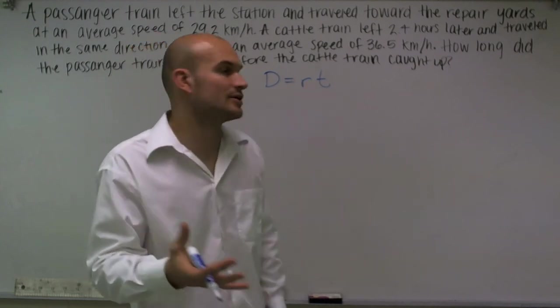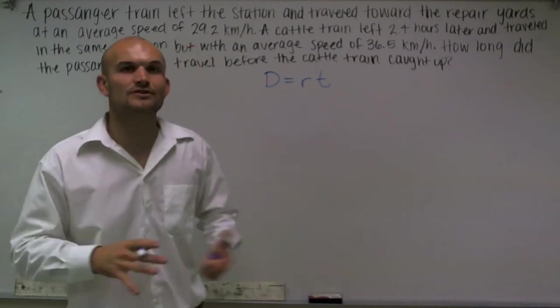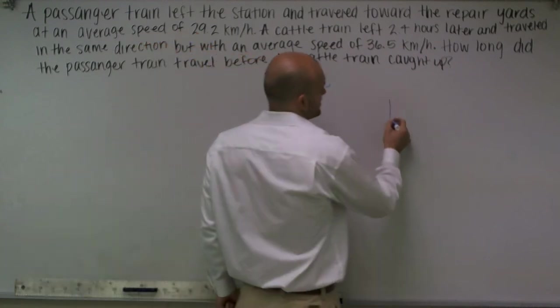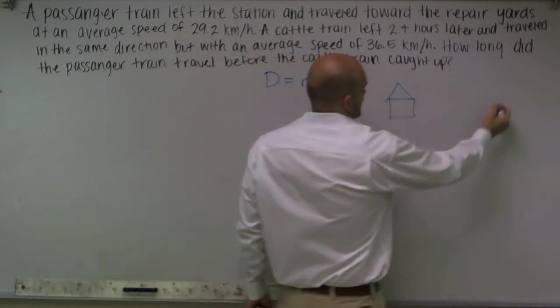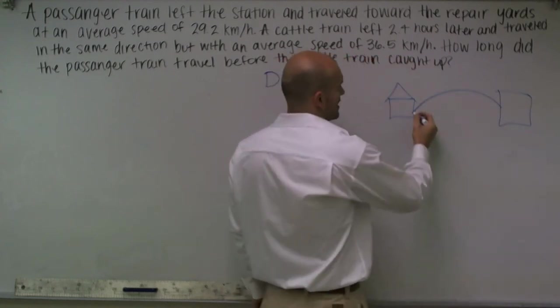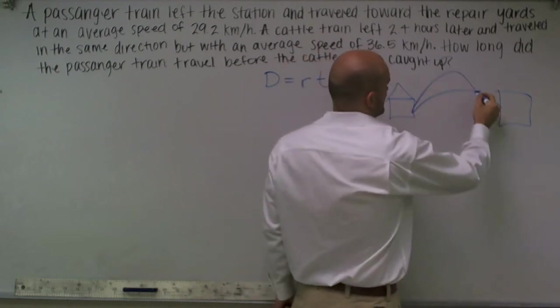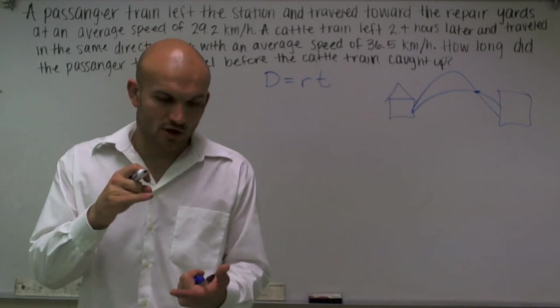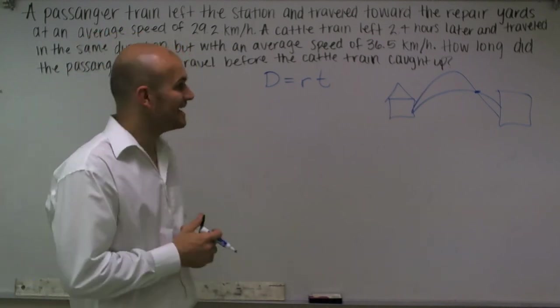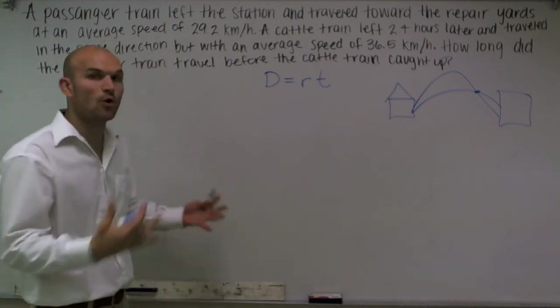The next thing that you're going to want to know is with this problem, you're really going to have to draw something up. Make a picture of it. So it does not need to be crazy. Here's your train station. Here's the yard. We know that one train goes like this and then the other one leaves 2.4 hours later and they meet somewhere before the train station. So now we have a diagram that we can look at to see how we're going to figure this out.